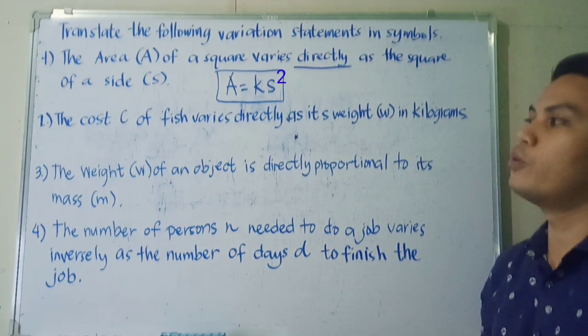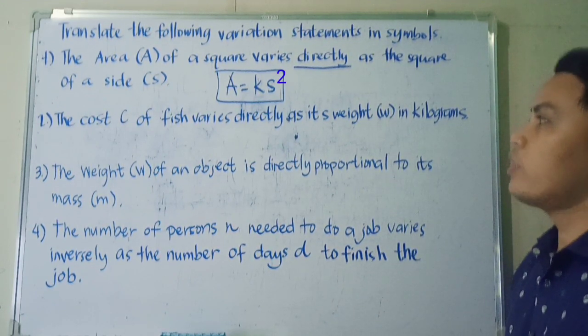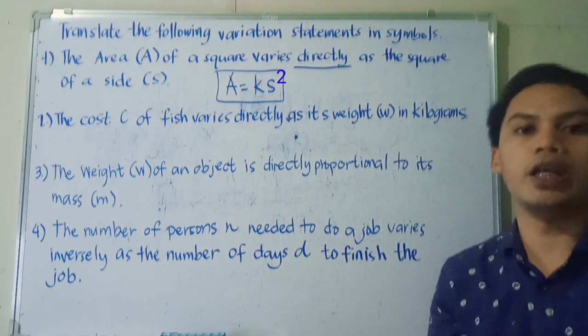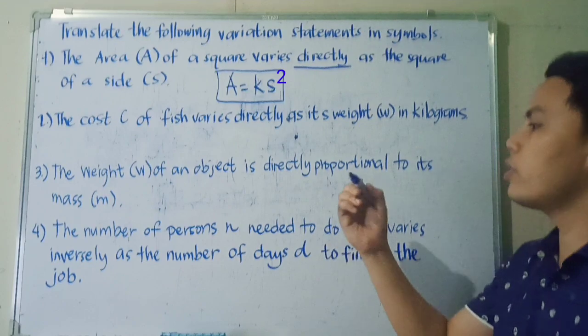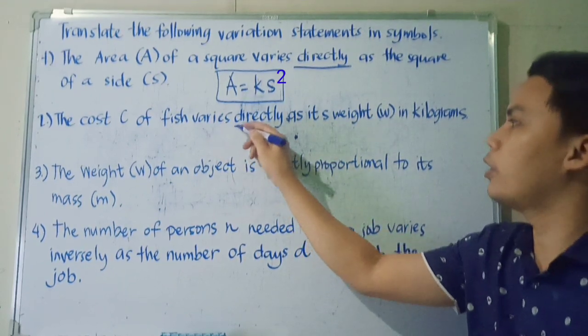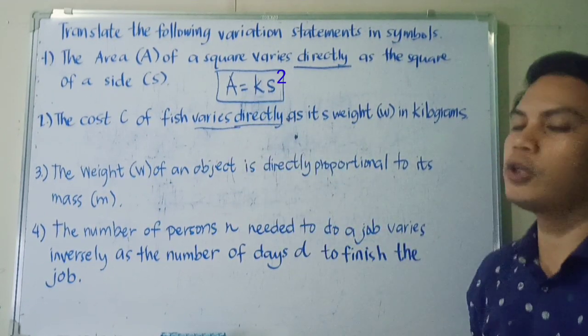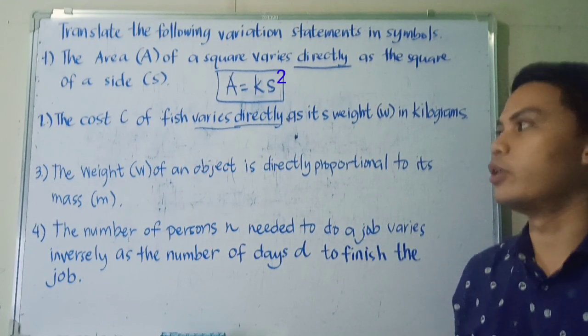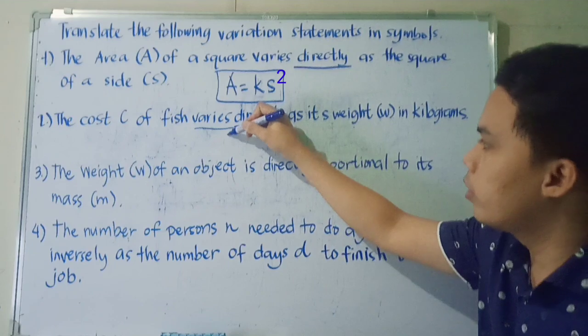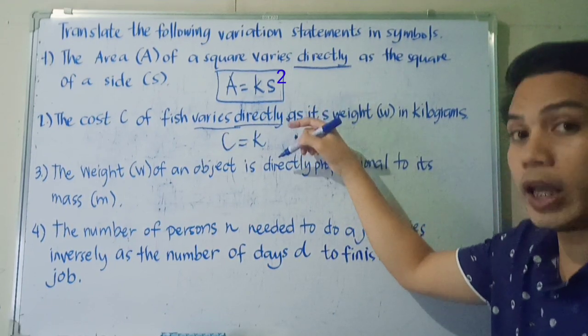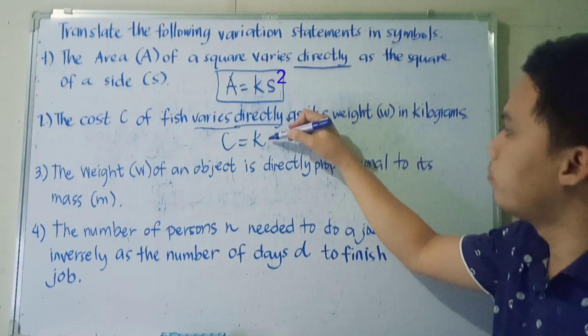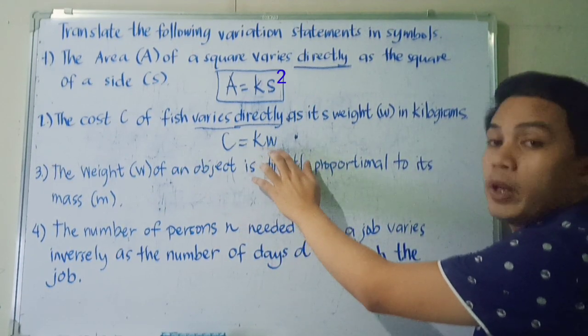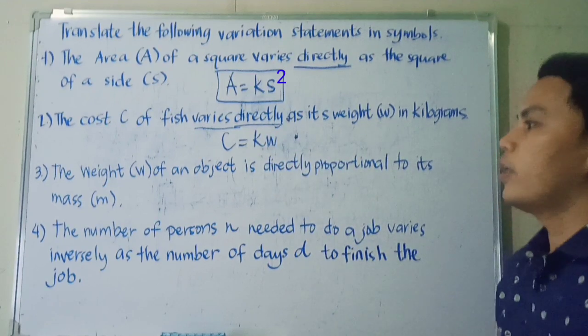Let's have number 2. The cost C of fish varies directly as its weight W in kilograms. So since the keyword is still varies directly, then we're going to transform this one using direct variation. So we have C equals k, the constant, and weight. So C will depend on the weight of the fish.